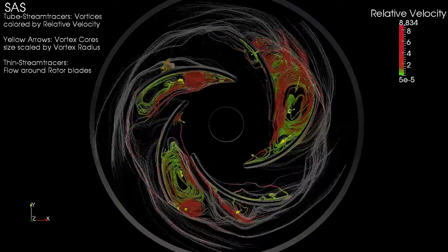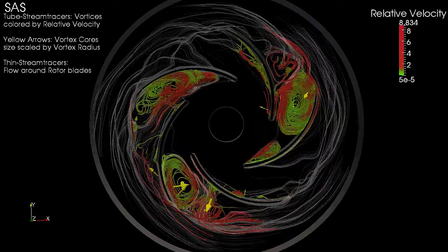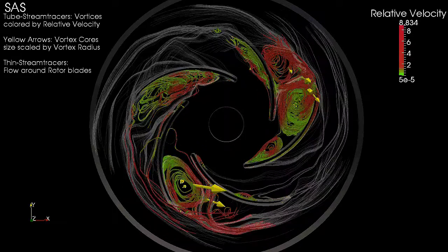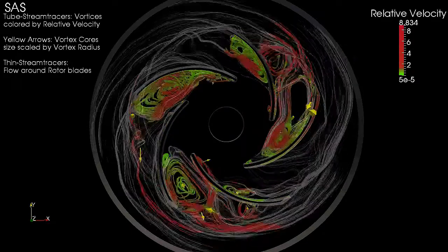The rotor blades and interface are shown in semi-transparent gray to provide context. Yellow arrows mark the position and direction of the vortex cores that we computed. The arrow sizes are scaled by the vortex radius.